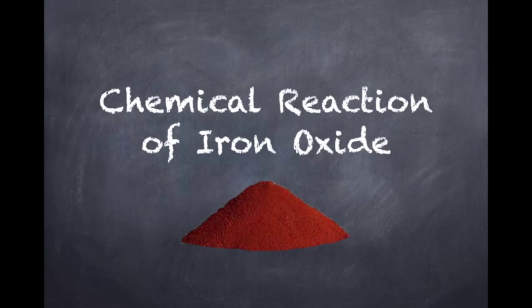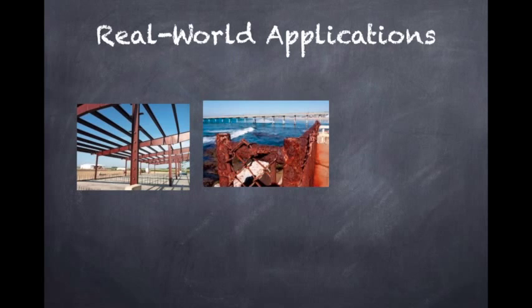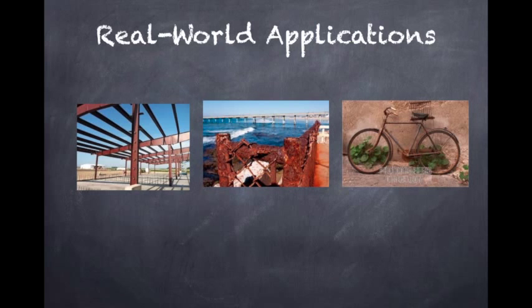This chemical reaction is found in many places where iron is present. It can be found in metal beam structures in buildings, chains and fences near oceans, and bikes left in the rain, for example.